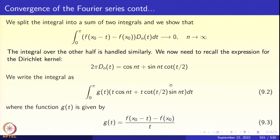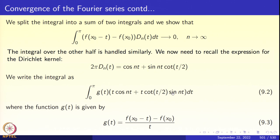The Riemann-Lebesgue lemma comes to our rescue and the proof is completed. The conditions in the hypothesis can be considerably relaxed, but we are not interested in giving the most general theorem. For generalizations, one can consult the monumental two-volume text of Antoni Zygmund called Trigonometric Series, page 52. A large class of functions of interest in engineering will be piecewise smooth and fall into the scope of our theorem.